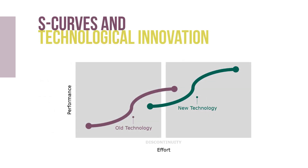From the invention of the printing press to the rapid advance of the internet, studies of hundreds of technological innovations have shown that nearly all technology cycles follow the typical S-curve pattern of innovation shown here.